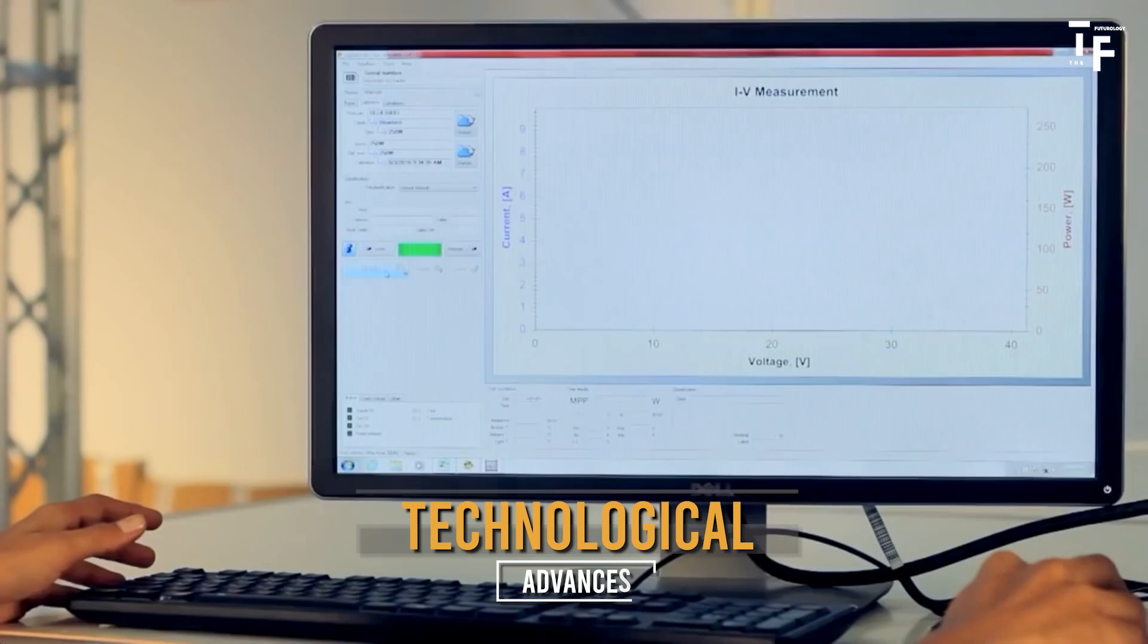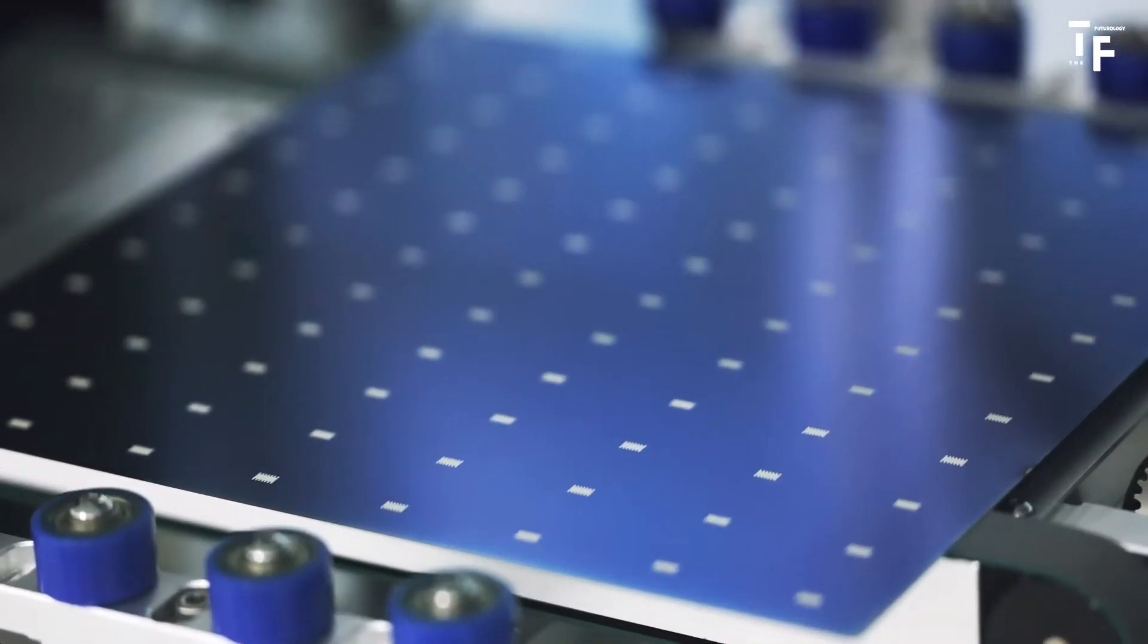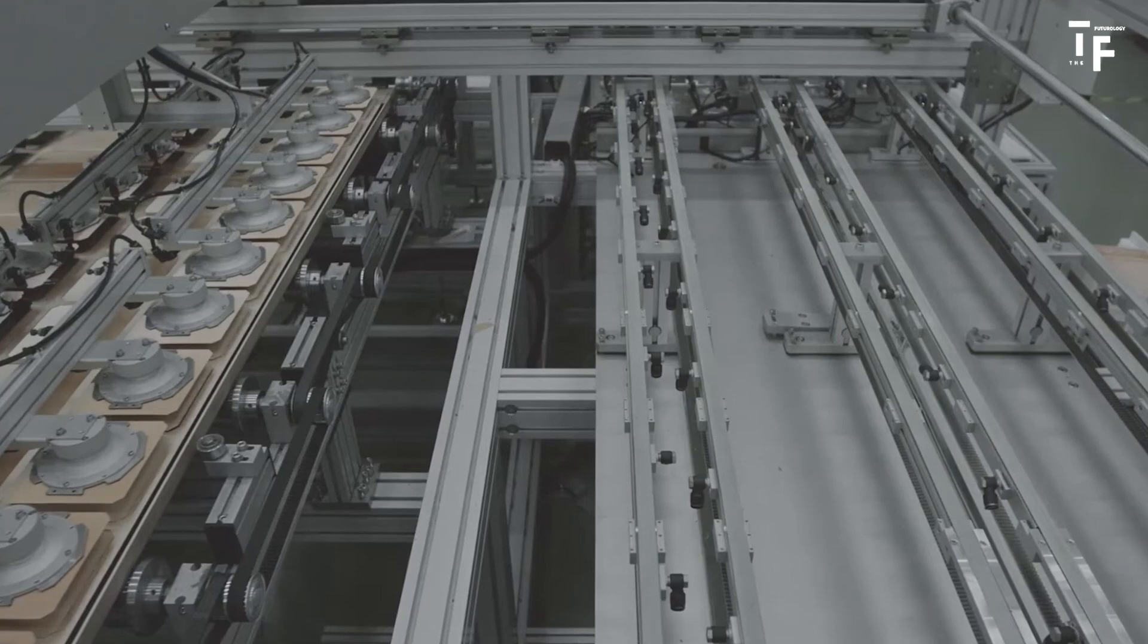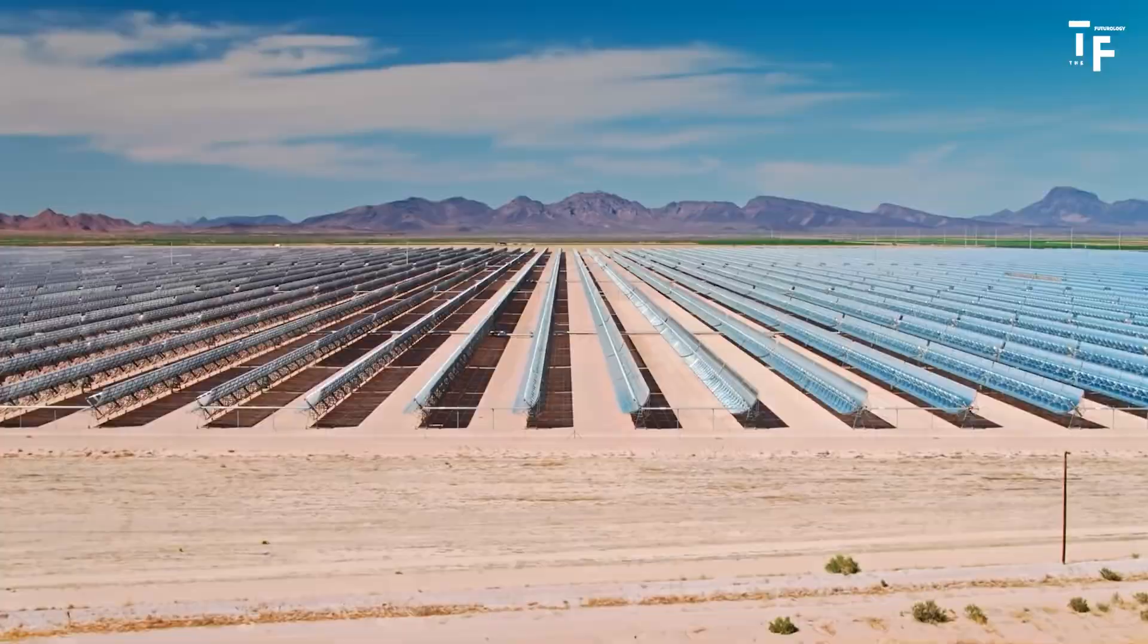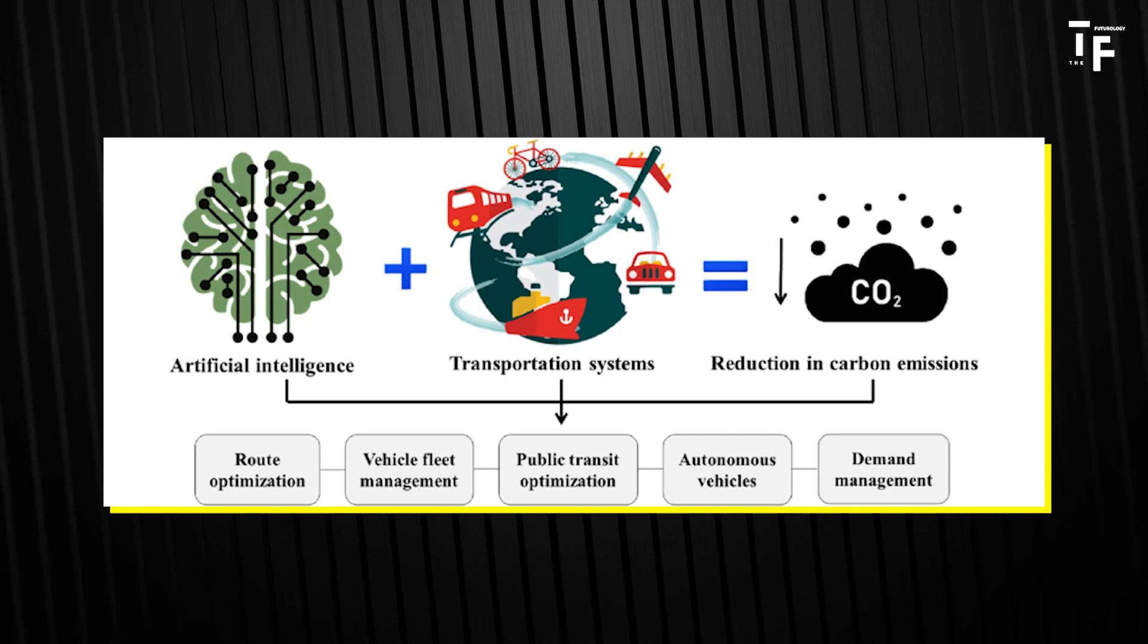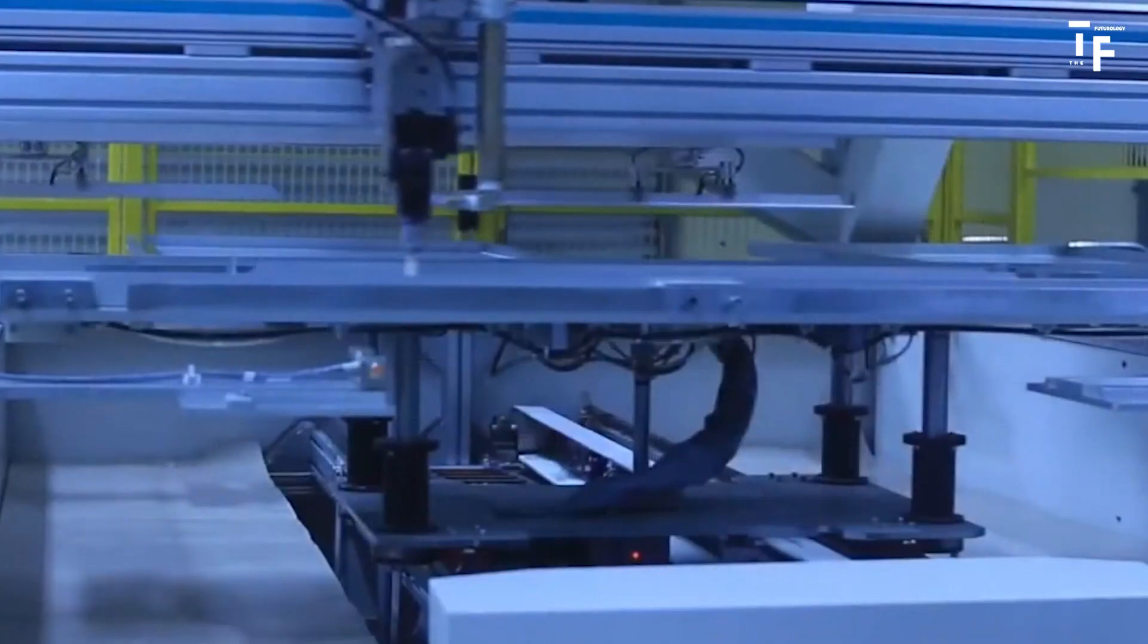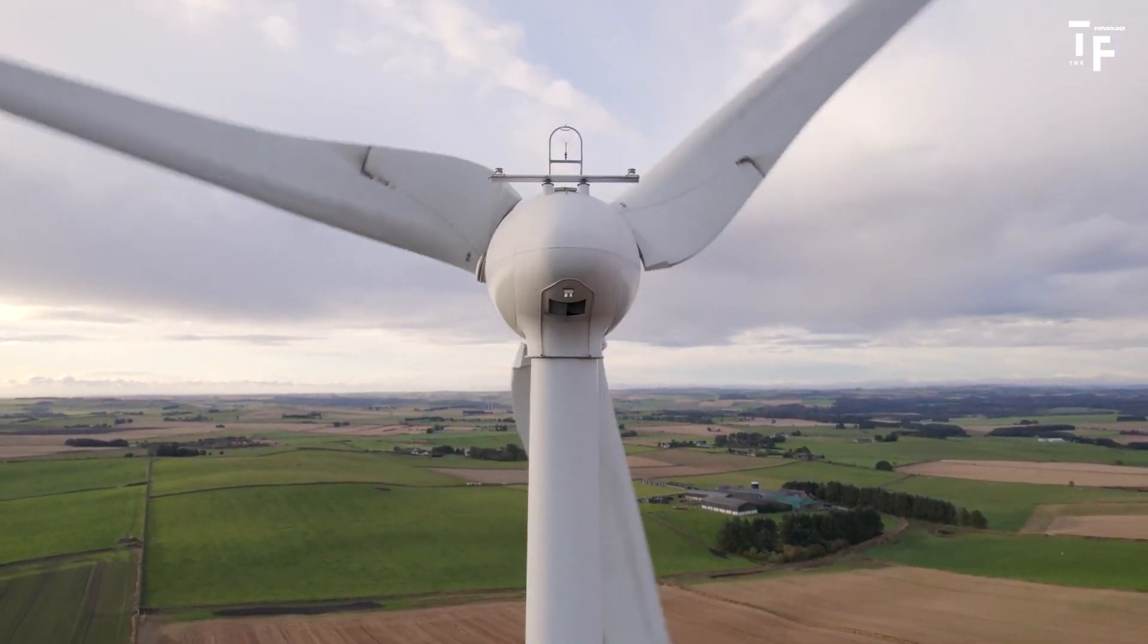Technological advances. Key technologies are emerging that will shape the future of renewable energy. One of the most promising is green hydrogen, produced using renewable energy to split water molecules. This technology is gaining traction, with several large-scale projects planned in Europe, India and the United States. Additionally, AI-driven carbon management is becoming critical for optimizing energy use and reducing emissions across industries. These technologies are set to play major roles in making renewable energy more efficient and scalable.